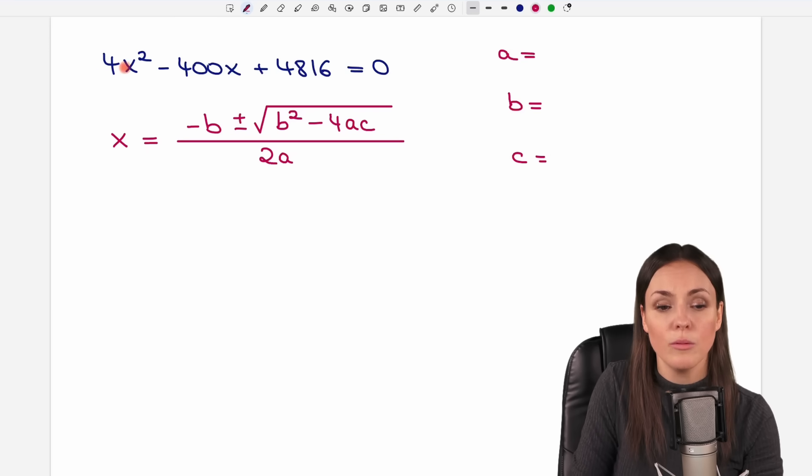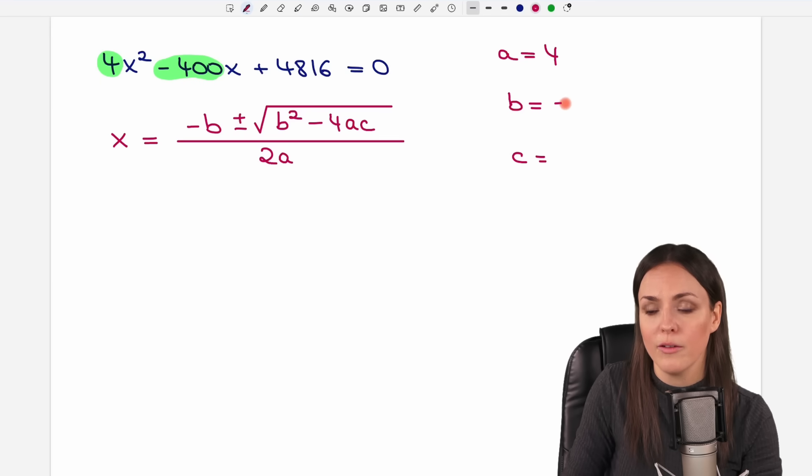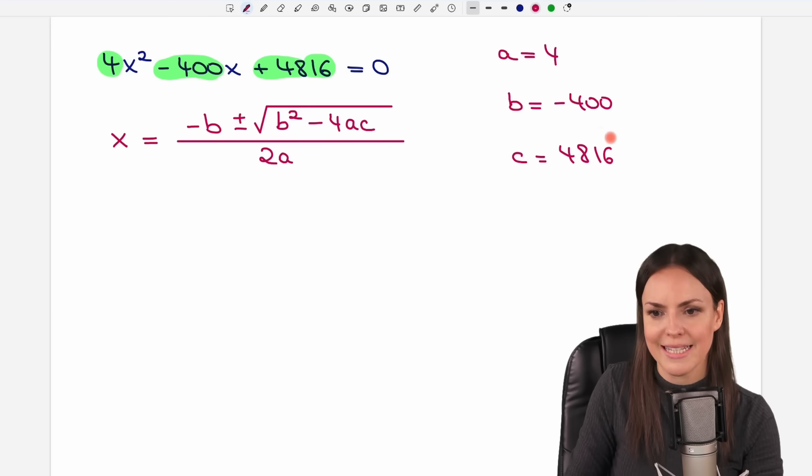A is always the number in front of my x squared. So it's the 4. B is always the number in front of my x with a sign. So it's negative 400. And c is always the number that doesn't have any x. So it's the 4816.